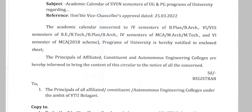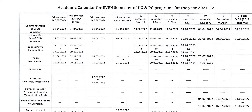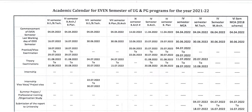The academic calendar concerns the 4th semester of B.Plan and B.Arch, 6th and 8th semester of B.Tech, B.Plan, and B.Arch, and the 4th semester of MCA, M.Com, and M.Tech, and the 6th semester of MCA under the 18 scheme programs of the university, as notified in the enclosed sheet.